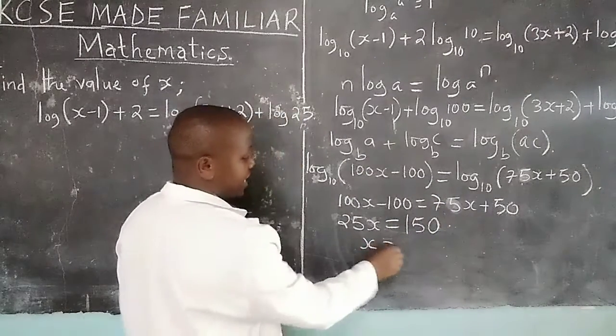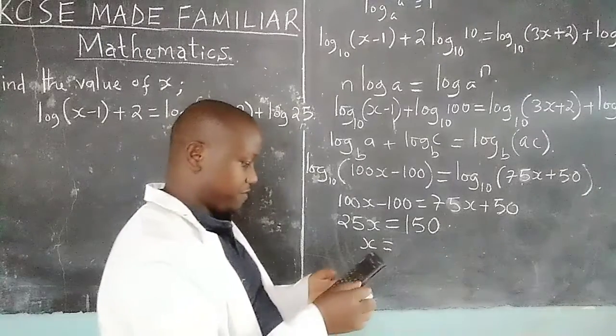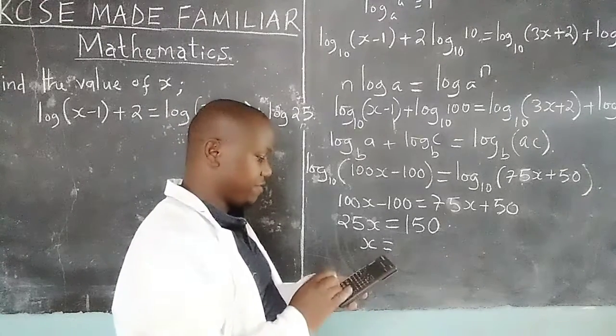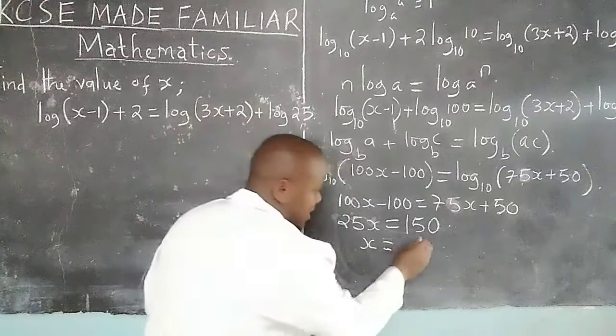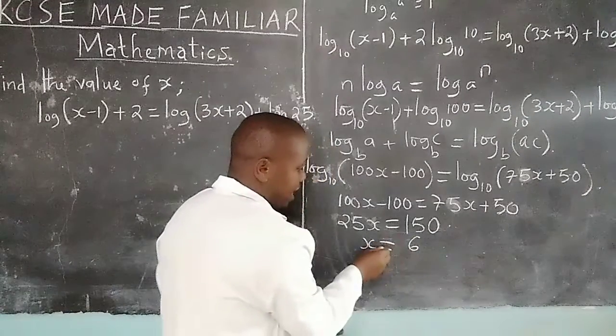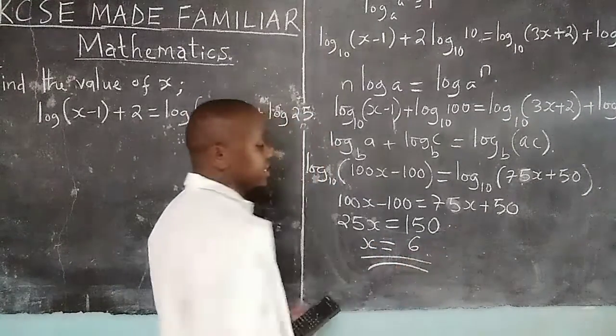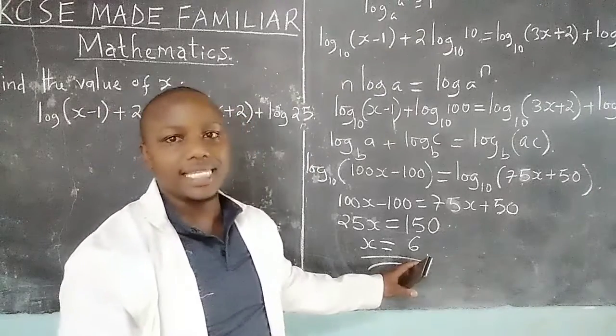So that will remain with x, we just divide 150 by 25, giving us x as 6. So the value of x for this logarithmic equation will be 6.